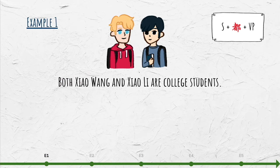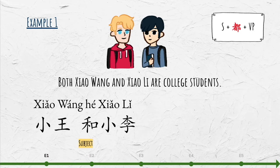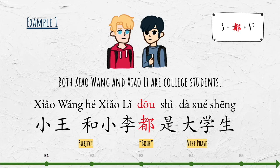For example: 'Both 小王 and 小李 are college students.' The subject is 小王和小李, 都 follows, and the verb phrase is 是大学生. The full sentence is: 小王和小李都是大学生.